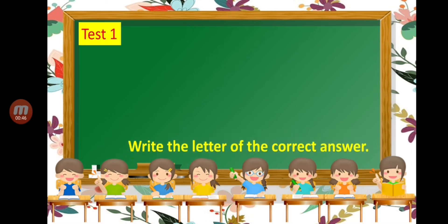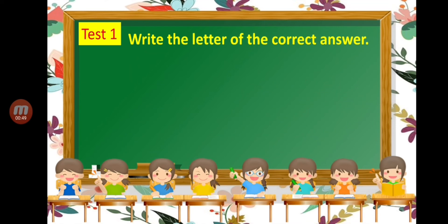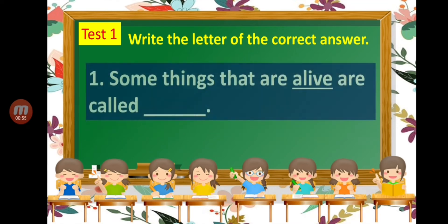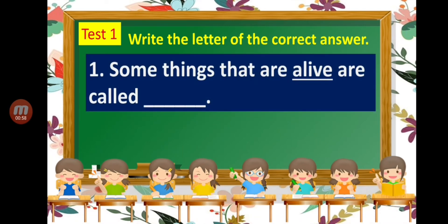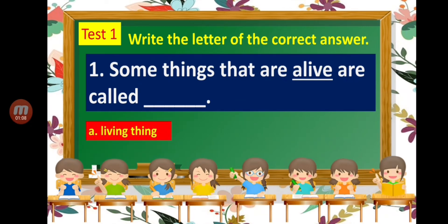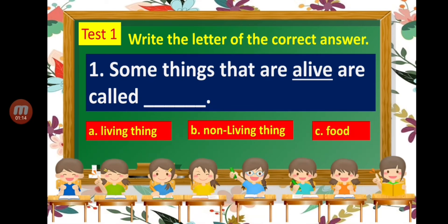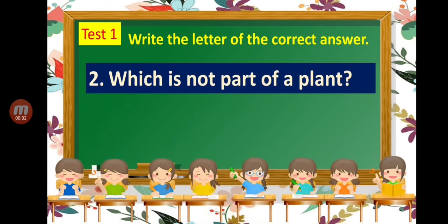Test One: write the letter of the correct answer. Number one: some things that are alive are called blank. A — living thing. B — non-living thing. C — food.